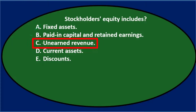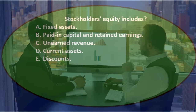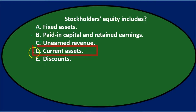C says unearned revenue — that could be confusing because it has the word revenue in it, which sounds like an income statement account. But unearned revenue is actually a liability, representing when we got paid but haven't yet done the work. Liabilities aren't in the equity section, so that's out. D says current assets, and again, it's an asset, not equity.